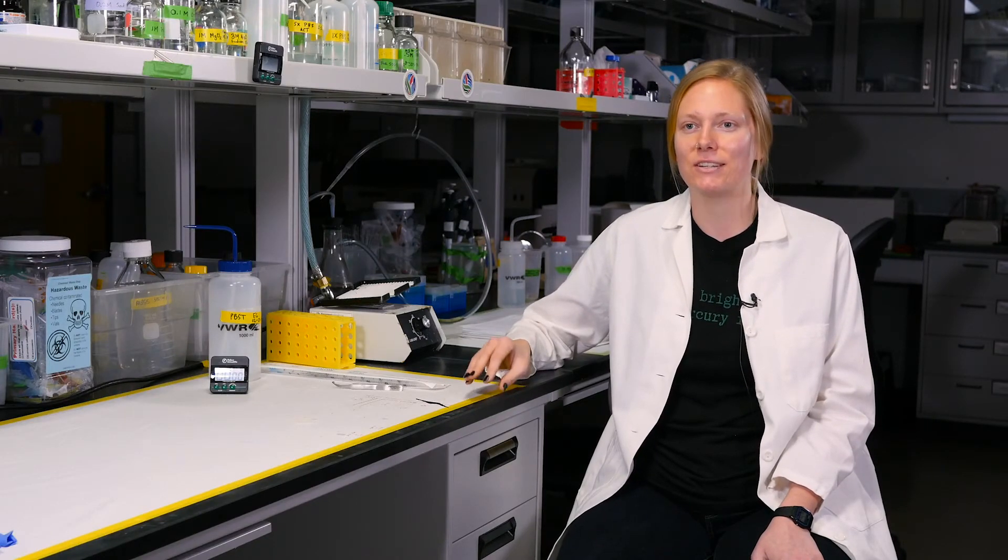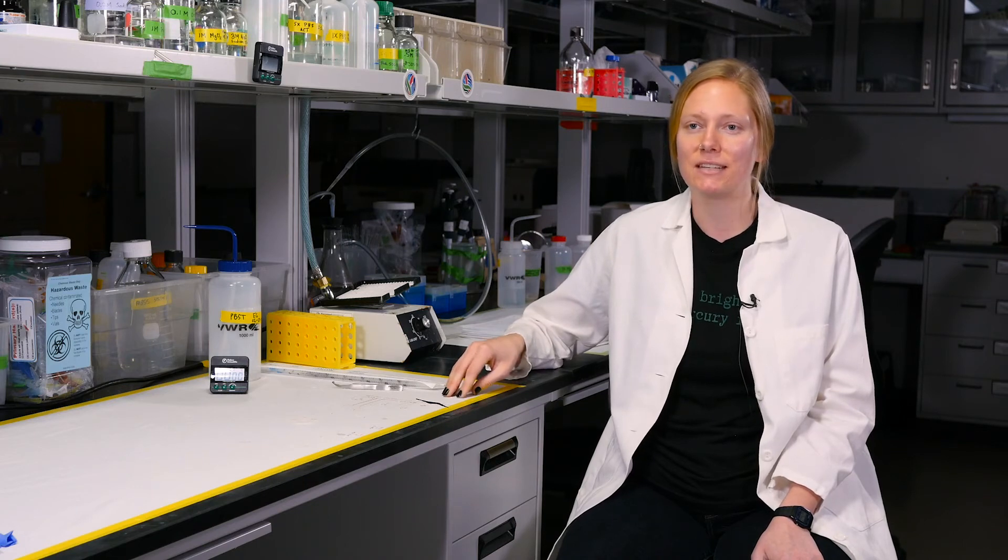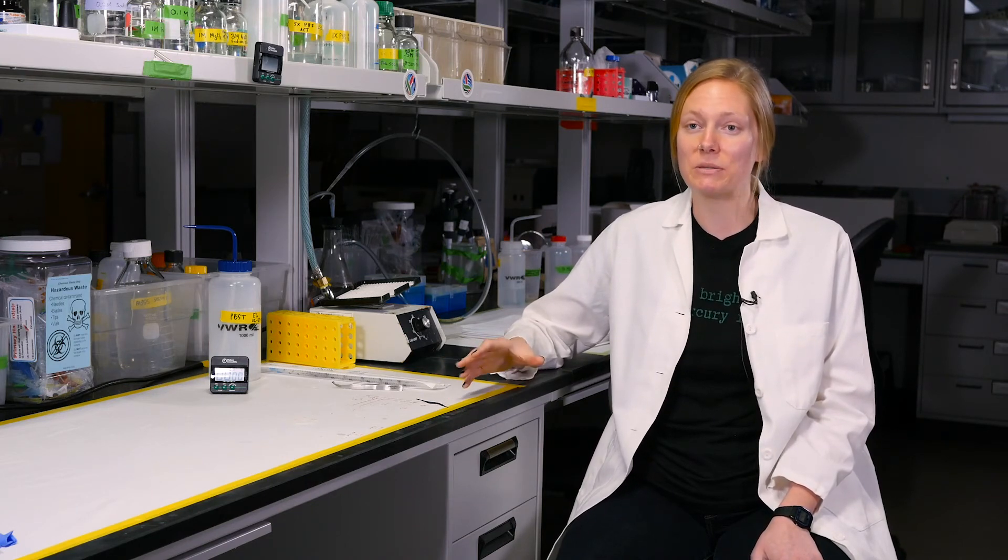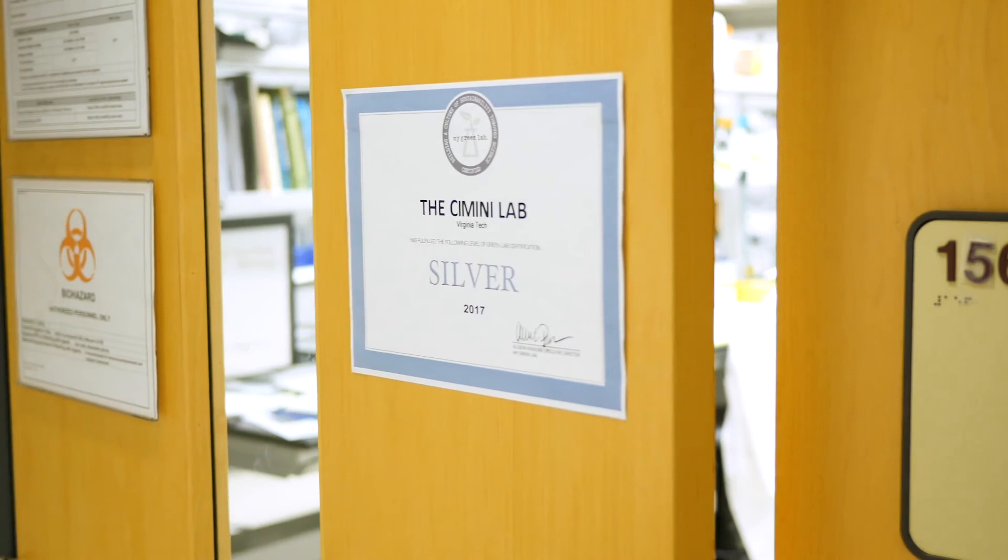So being an academic typically comes with three components: there's research, there's teaching, and there's service. A lot of times research is the biggest priority and then there's teaching and then service is somewhat maybe like 10 percent or less of your time. But I'm really trying to as a graduate student make service be an equal 33.33 percent of the work that I do and the service that I focus on is green labs and promoting sustainability in research. I'm doing that as not only a service to the lab that I work in but also to my campus and to the environment.